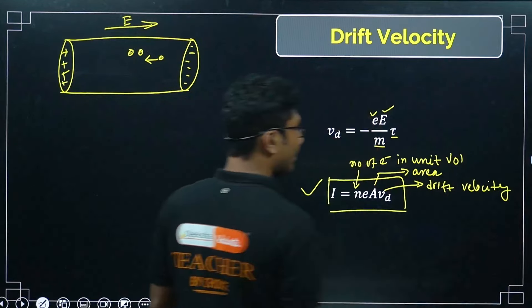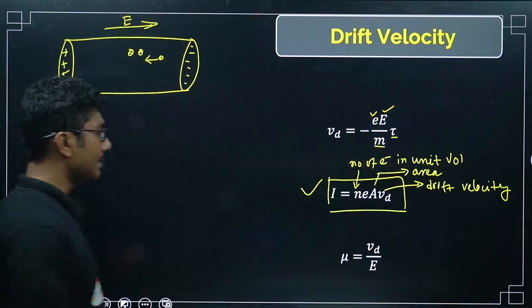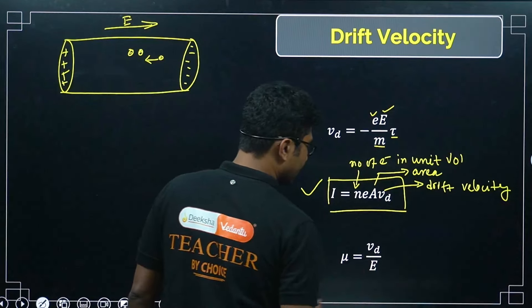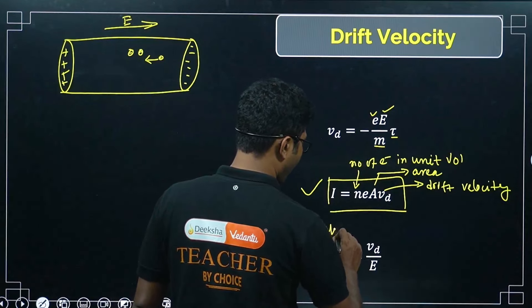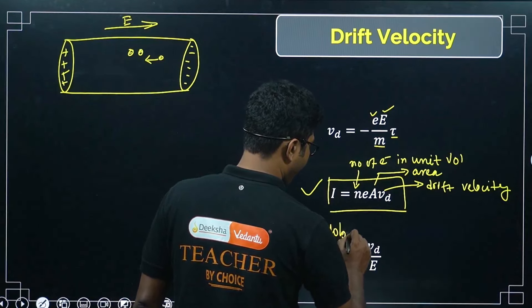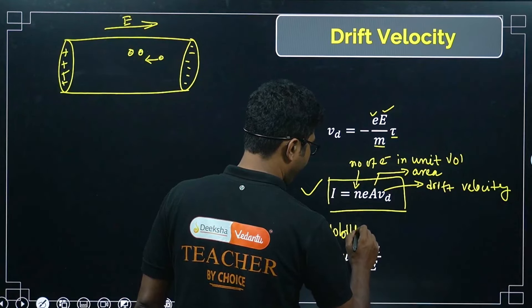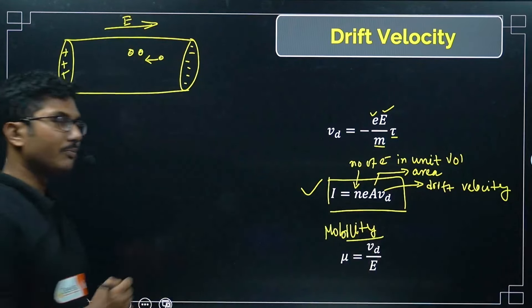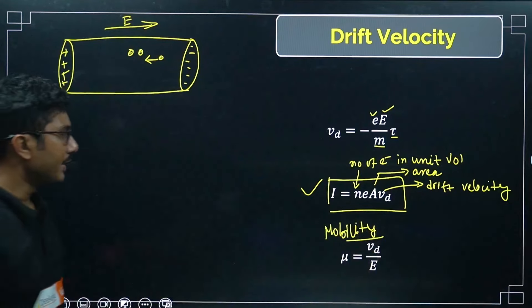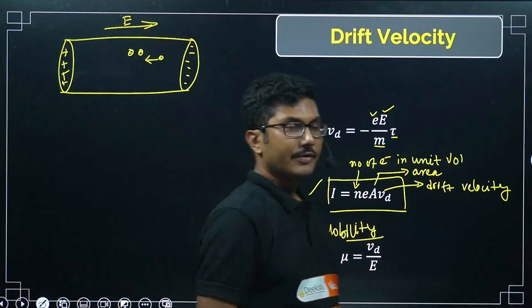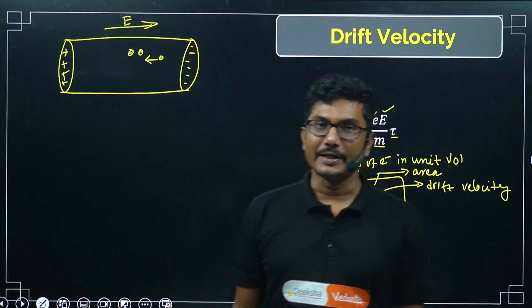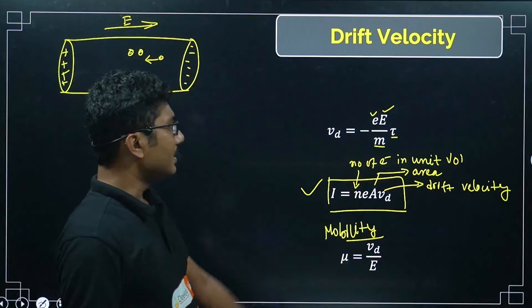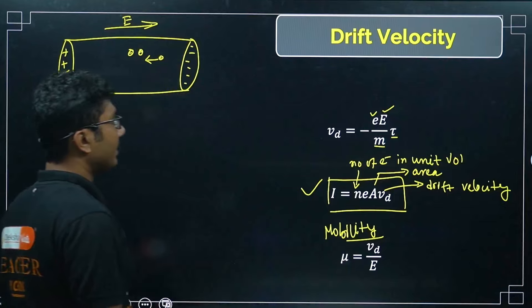Mobility is defined as drift velocity divided by electric field strength: μ = v_d/E. We will solve a problem based on mobility.